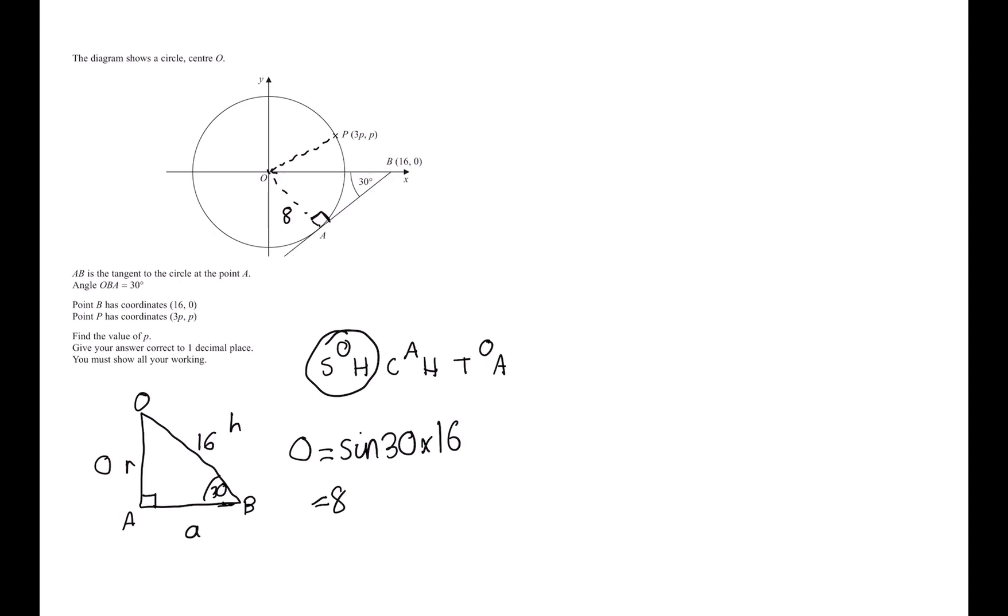Now if we put that in a calculator, we're going to get this length as 8. So OA is equal to 8. This length is equal to 8, and this is also going to be equal to 8, as it's just the radius of the circle.